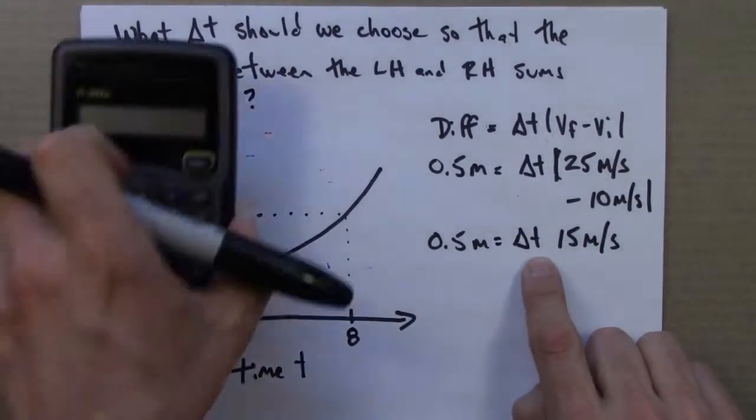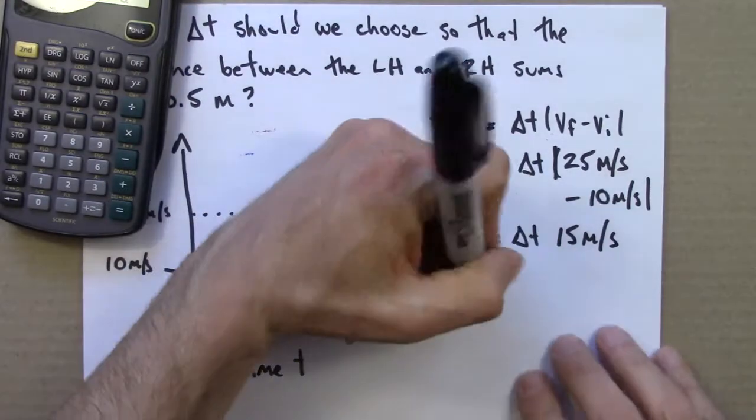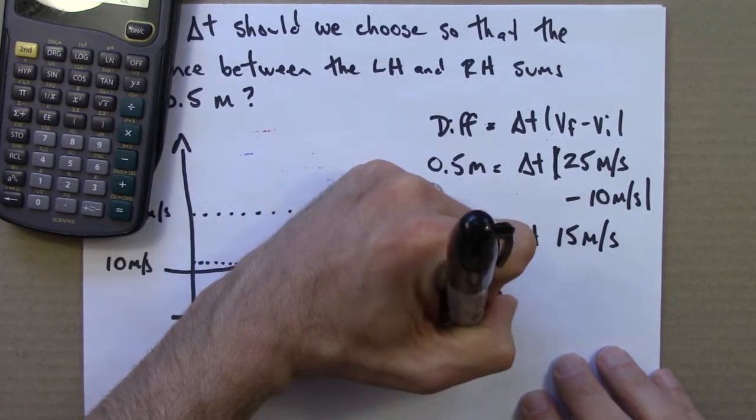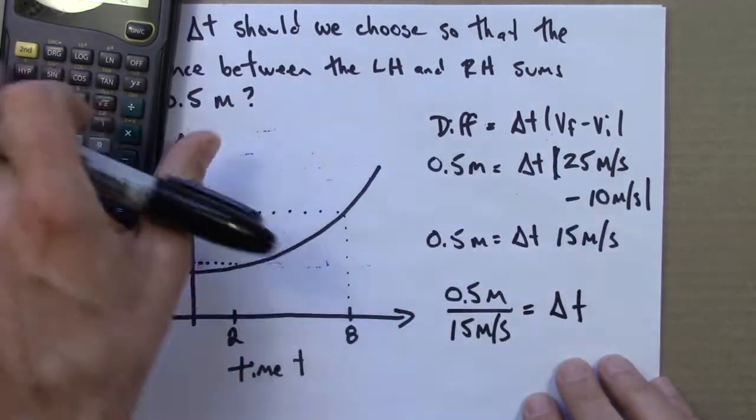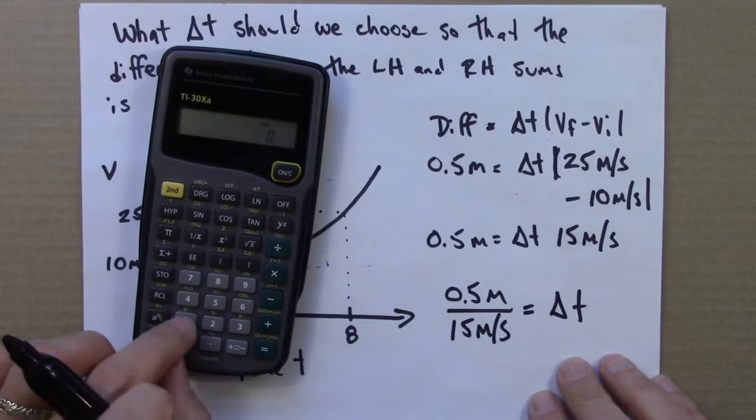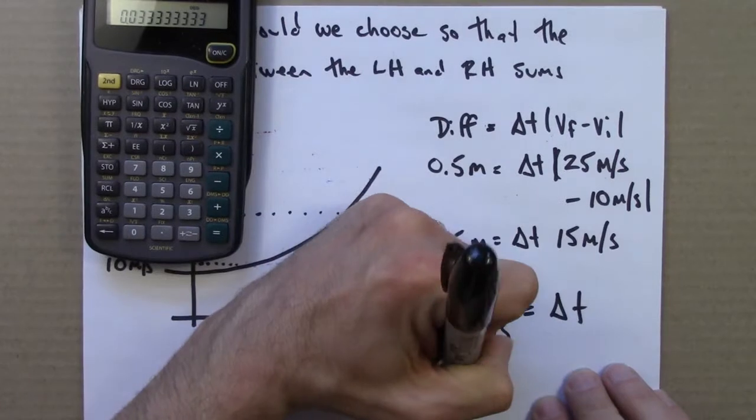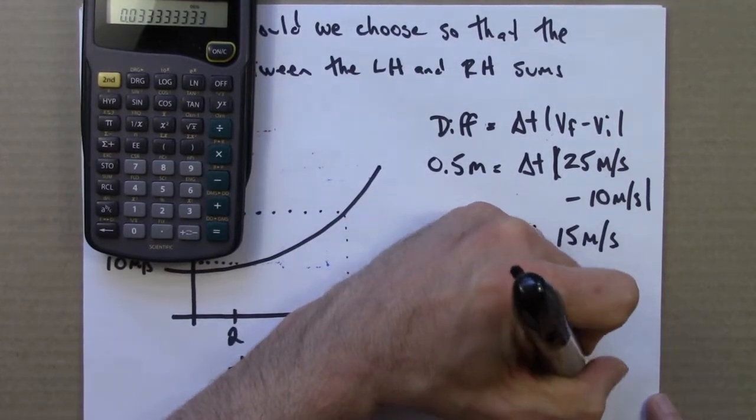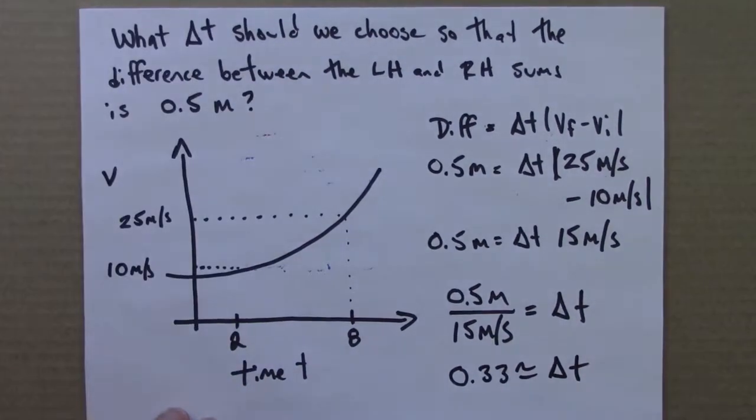So we've got 0.5 meters equals delta t times 15 meters per second. So we want to solve for delta t. So I'll divide both sides by 15. 0.5 meters divided by 15 meters per second equals delta t. So let's see what that is. 0.5 divided by 15 equals 0.033 seconds is delta t.